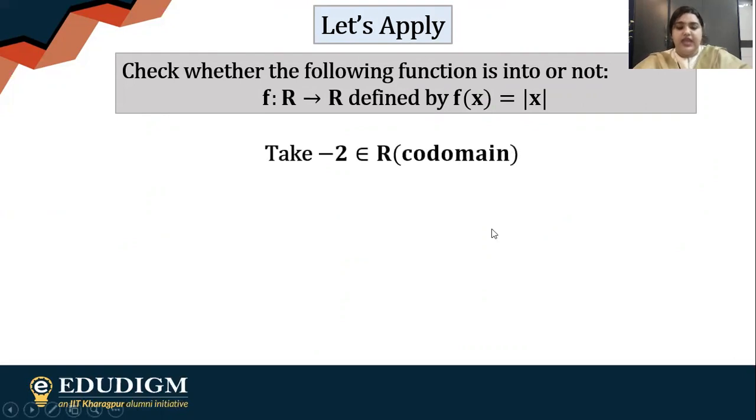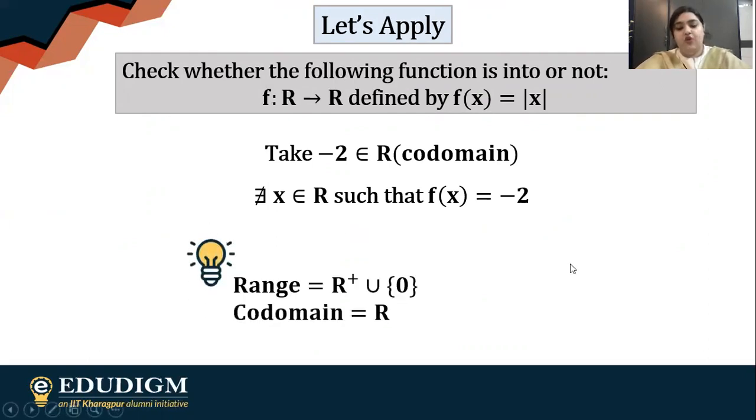I'm taking -2 in R. This R is the codomain—the function is from R to R. Unfortunately, you cannot have any input where the output is negative because we're talking about the modulus function. So this is not onto; this is into.